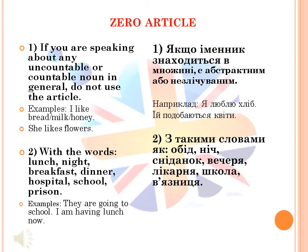Also, we use zero article with the words lunch, night, breakfast, dinner, hospital, school, or prison. For example: 'They are going to school.' 'I am having lunch now.'